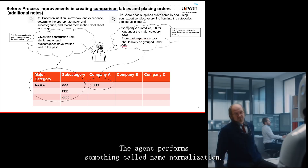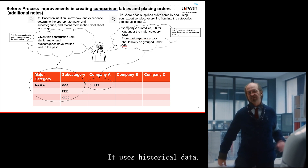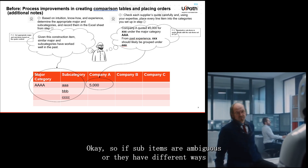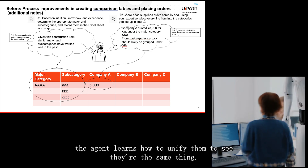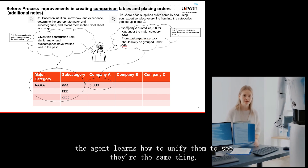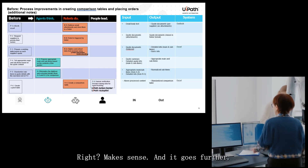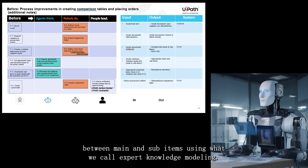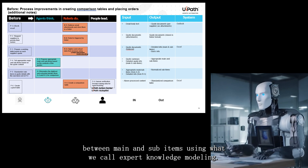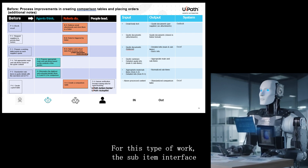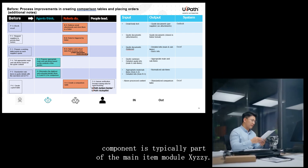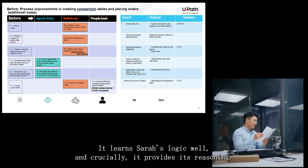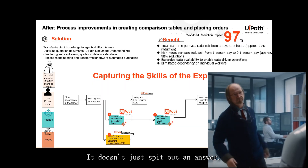The agent performs name normalization using historical data. If sub items are written differently across quotes — like 'widget X' in one and 'WDGX' in another — the agent learns to unify them and recognize they're the same thing. It goes further: it can estimate the relationship between main and sub items using expert knowledge modeling, learning rules like 'for this type of work, sub item interface component is typically part of main item module XYZ.' It learns Sarah's logic.